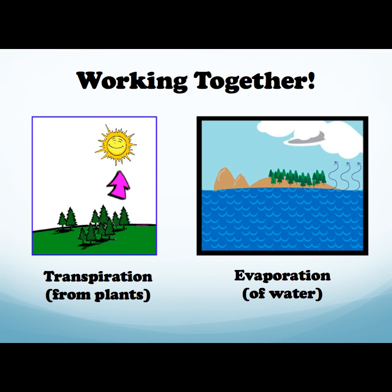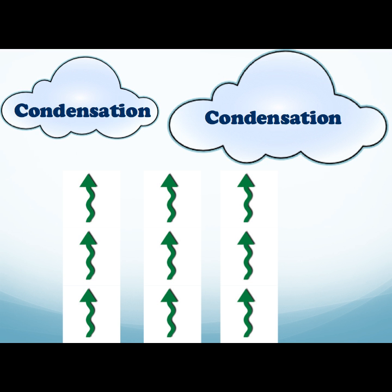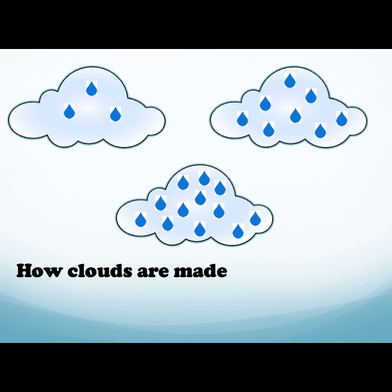Transpiration helps out evaporation so that it is not the only one doing all of the work. The next step in the water cycle is condensation. Condensation is when the water vapor rises into the air, cools, and then changes back into a liquid. As more and more water vapor rises and turns into liquid, the clouds in the air become fuller and fuller.